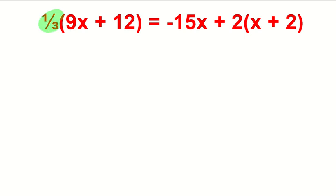When I have a fraction to distribute, I can multiply by the numerator. Numerator is one, so I don't really need to multiply by one. And I can divide by the denominator. So I'm going to divide by three. Nine divided by three gives me 3x. And when we distribute, we distribute to both parts. So 12 divided by three gives me four. Everybody good with that part?